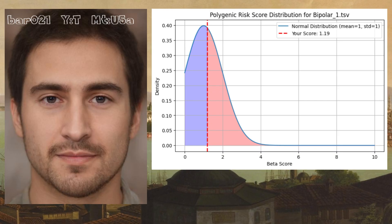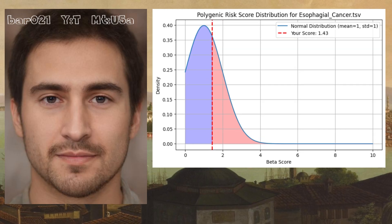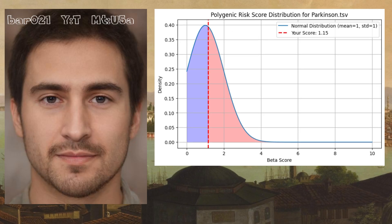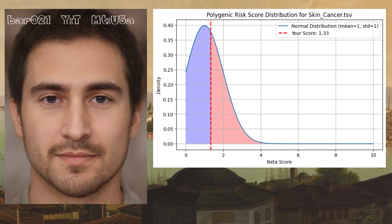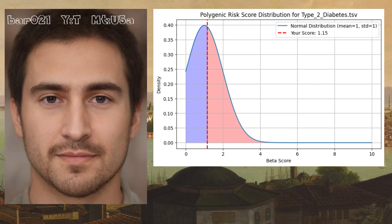With beta-calc, he scored particularly high for odds of bipolar disorder type 1, coronary artery disease, esophageal cancer, heart attack, Parkinson's disease, schizophrenia, skin cancer, stroke, and type 2 diabetes.